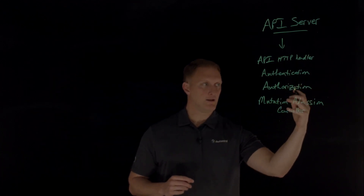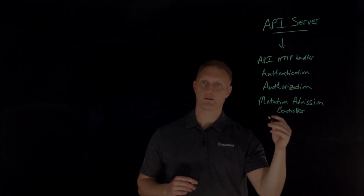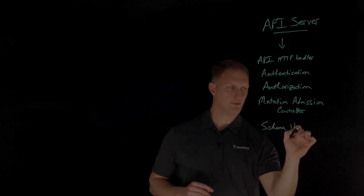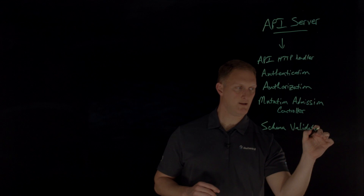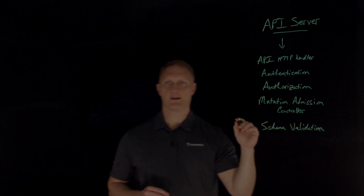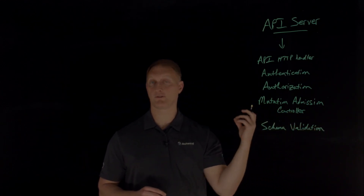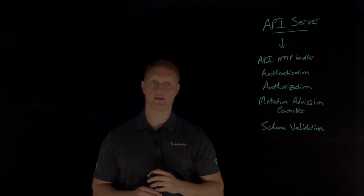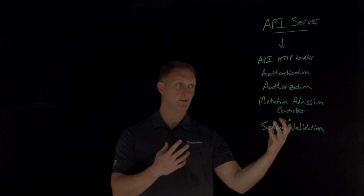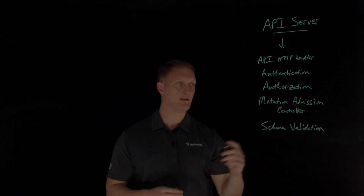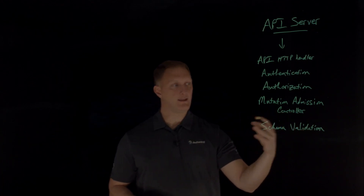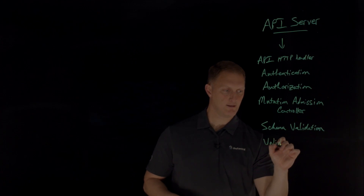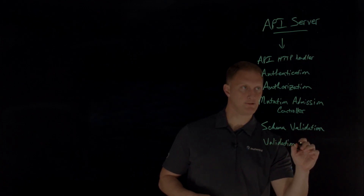Once you pass through the mutation admission controller, you come into schema validation. Schema validation determines: is the resource still valid against the internal schema after these modifications have been made? So is the YAML file malformed at this point or not? After that, if it passes through, it goes through the validation admission controller.